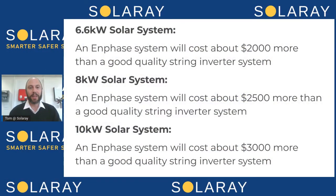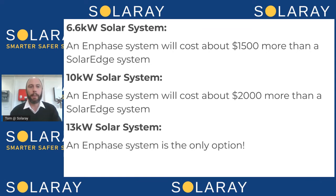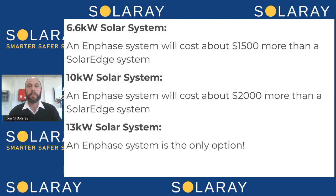Looking at the price comparisons: on a 6.6-kilowatt system, you're looking at about $1,500 more for an Enphase system over SolarEdge. On a 10-kilowatt system, you're looking at about $2,000 more. And on a 13-kilowatt system — representing a larger system — the number is around $3,000. On these larger systems, we'll almost always install an Enphase system. You can install SolarEdge in some circumstances, but a few things need to line up. So for a larger system, take that ballpark price and give our team a call so we can provide personalized advice.